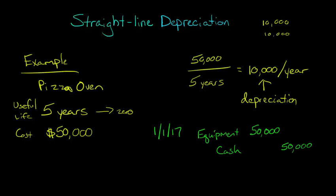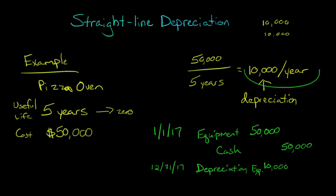Now, what is the entry going to look like for our depreciation, assuming we're using this straight line method? At the end of the year, December 31st, 2017, we're going to take depreciation expense — remember, that's an expense — and that's going to be a debit of $10,000. We said it's going to be $10,000 a year. And then we're going to credit accumulated depreciation for $10,000.